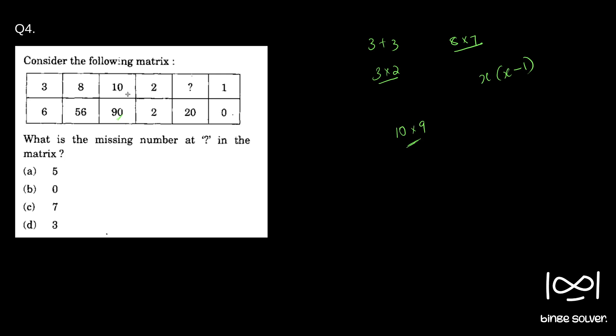So for 2, 2 into 1, which is 2, so that is true for the next element. And 1, 1 into 0 is 0.